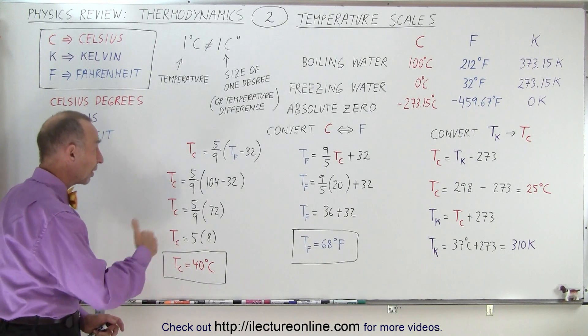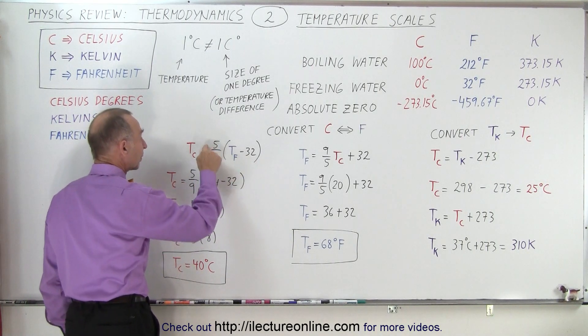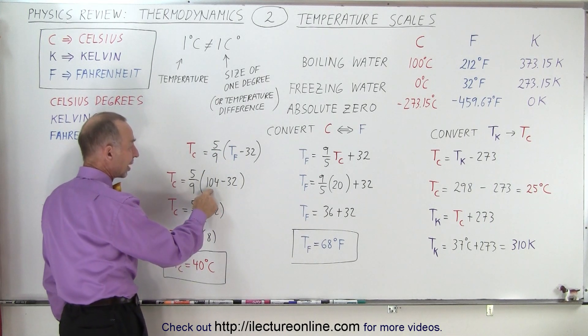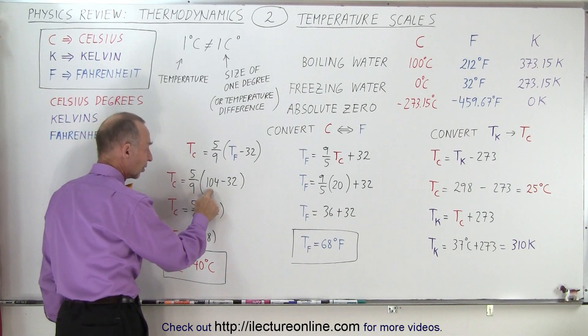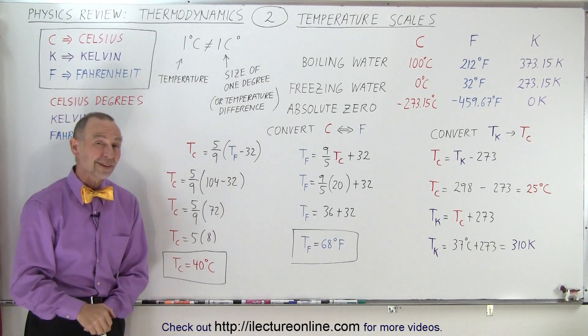When we go in the other direction, we take the temperature in Fahrenheit, subtract 32 first, and then we multiply times 5 over 9. In an example, when the temperature in Fahrenheit is 104 degrees, we subtract 32 times 5 over 9, which gives us 40 degrees Celsius.